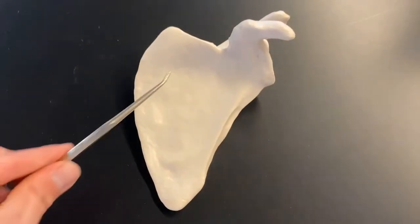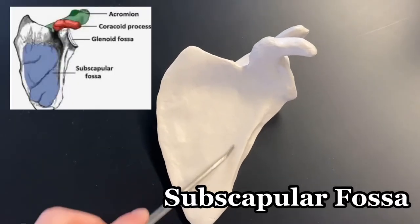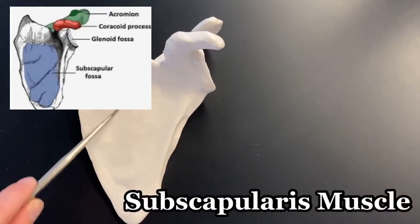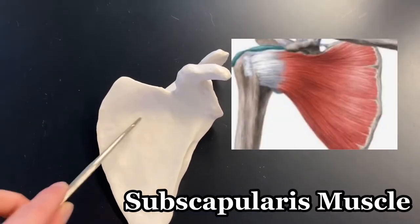We've also got the subscapular fossa. Subscapular fossa has the subscapularis muscle that attaches to this part.